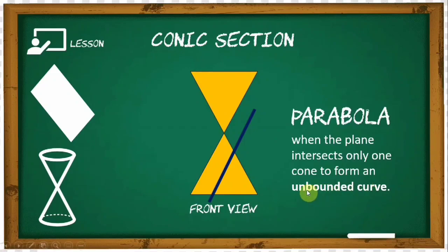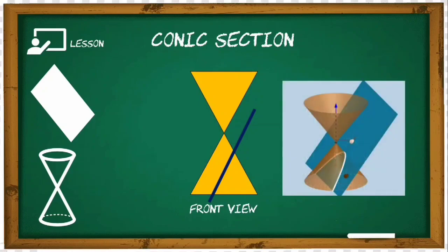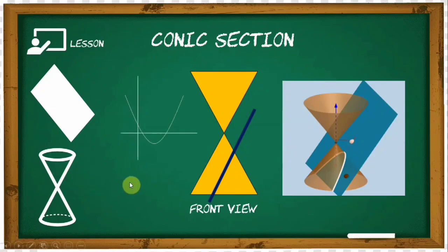Unlike the ellipse, which forms a bounded curve, the parabola forms an unbounded curve. In our 3D perspective, we form a U-shaped graph. On the x and y plane, this is the resulting graph — it looks familiar, similar to the graph of a quadratic function.